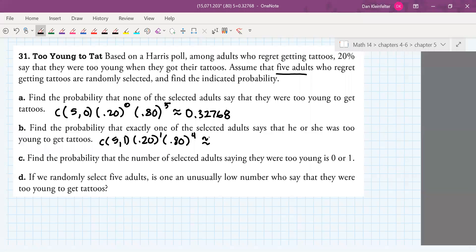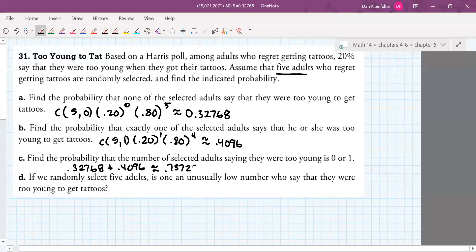So let's go ahead and see how this turns out. That's about .4096. Okay. So now for part C, it says find the probability that the number of selected adults saying they were too young is zero or one. So that basically is just asking us to make the sum of our answers for parts A and B. So that's about .73728.